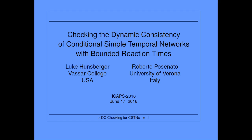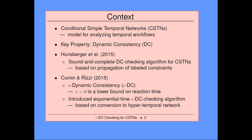Thank you. Our work is on a variant of simple temporal networks called conditional simple temporal networks, and we're also interested in bounded reaction times. A conditional simple temporal network is a model that can be used for analyzing temporal workflows. The key property that is important for them is called dynamic consistency — basically the existence of an execution strategy that will allow you to get where you want to be.